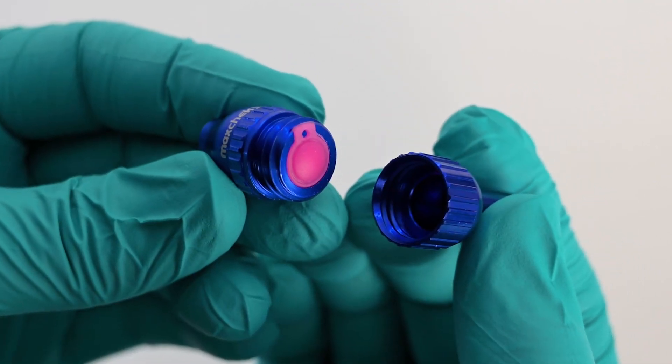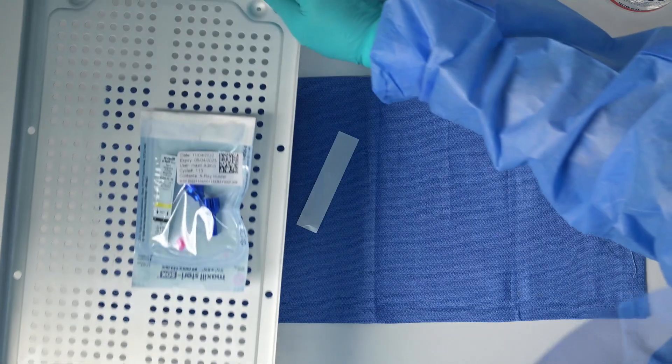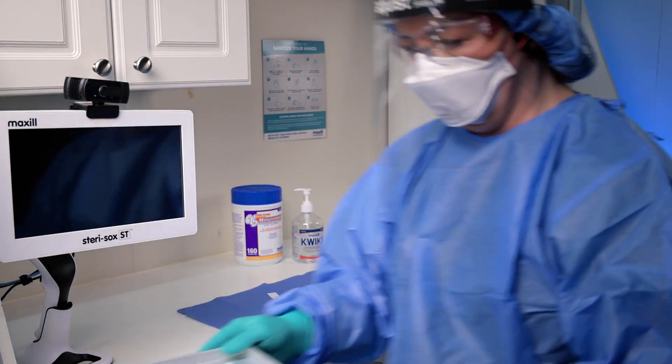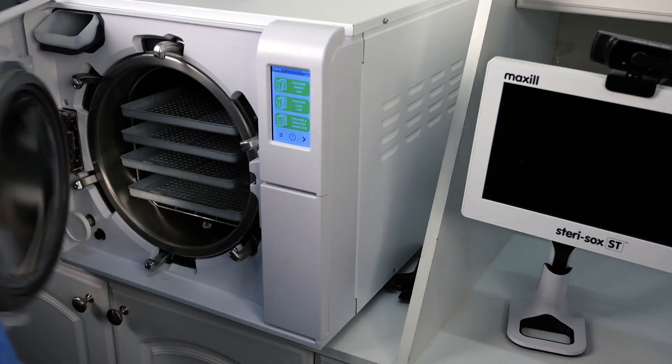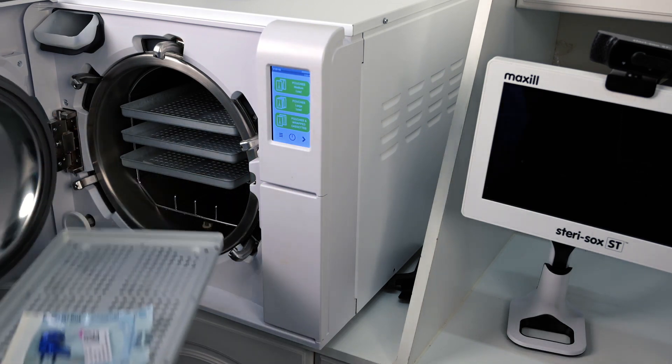It is easily disassembled to reveal the diaphragm inside and remove it for reprocessing using a steam autoclave. The most advantageous feature of the MaxCheck valve is its ability to withstand autoclaving.